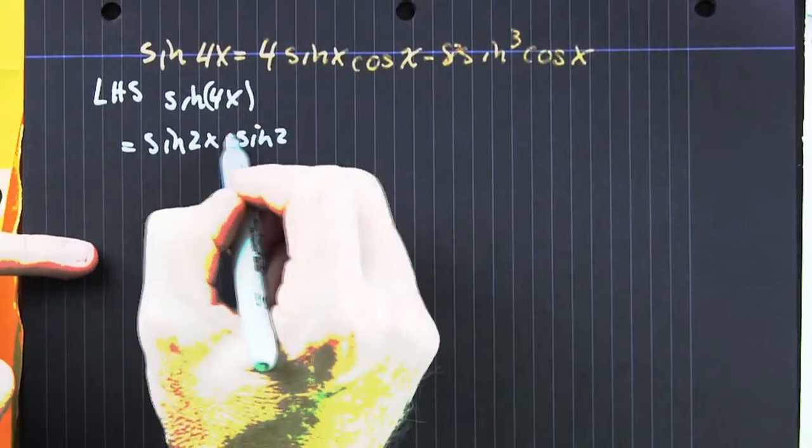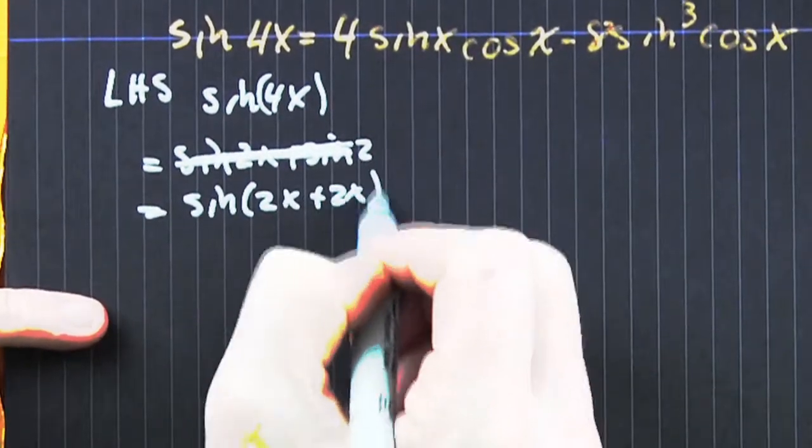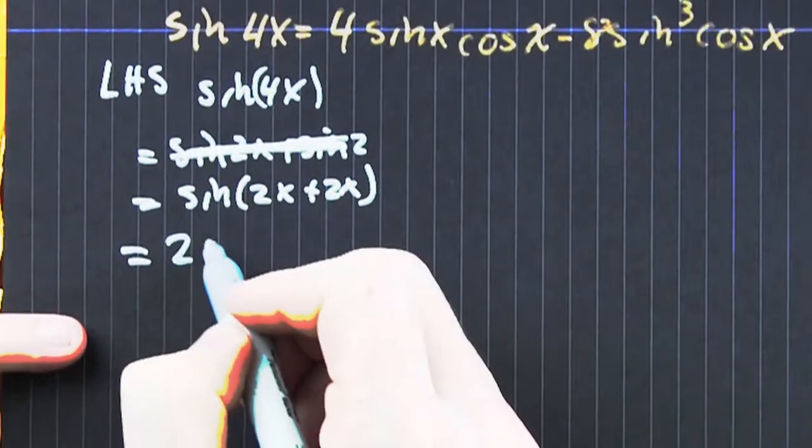So we start with the left-hand side. We rewrite that argument as 2x and 2x, because that's 4x.